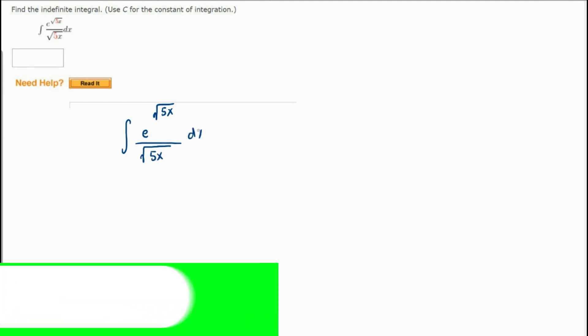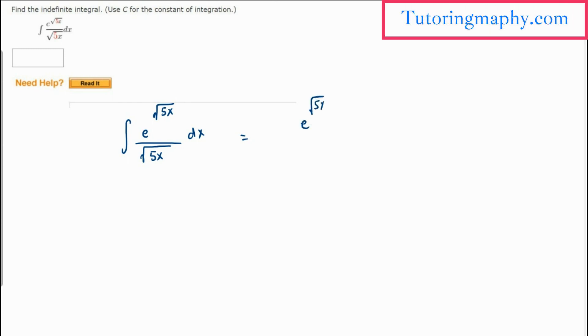What I'm going to do is rewrite this. E raised to root 5x remains as it is, and root of 5x becomes root 5 times root x. We're segregating the square root to both terms.